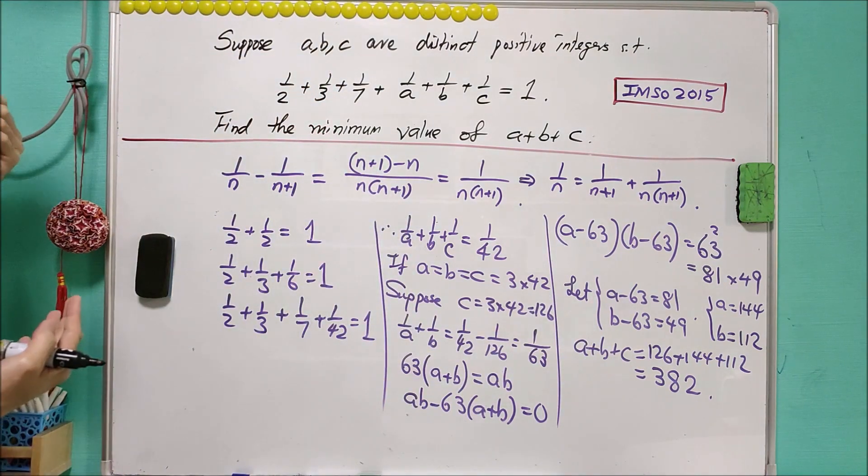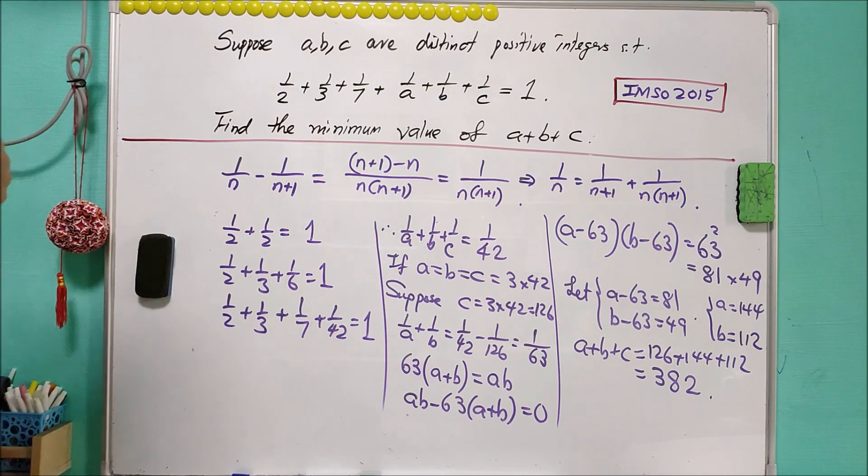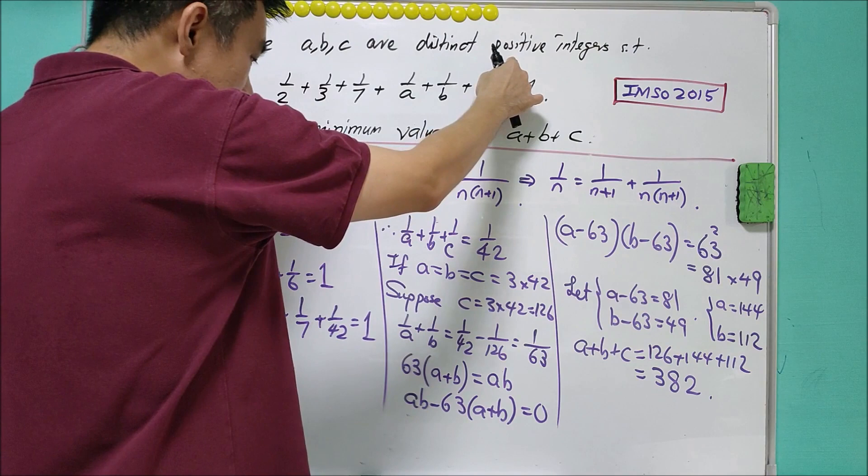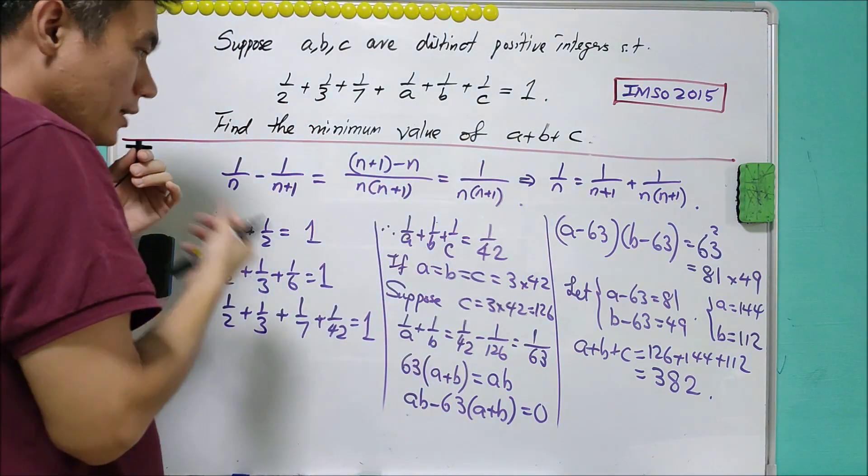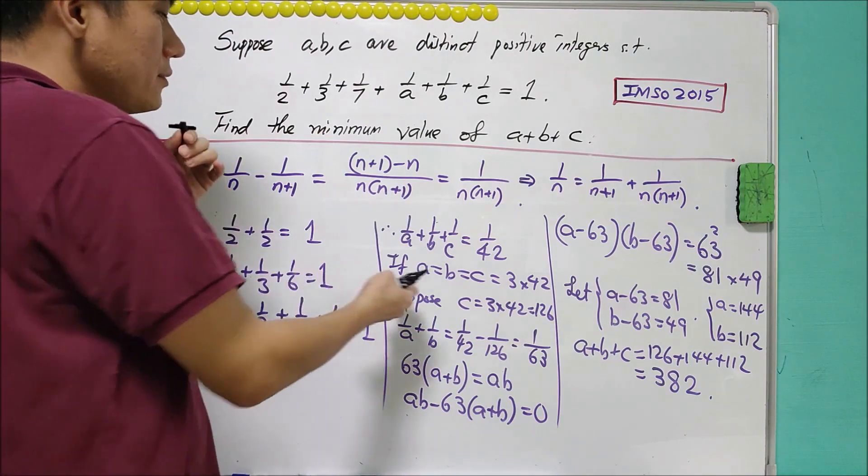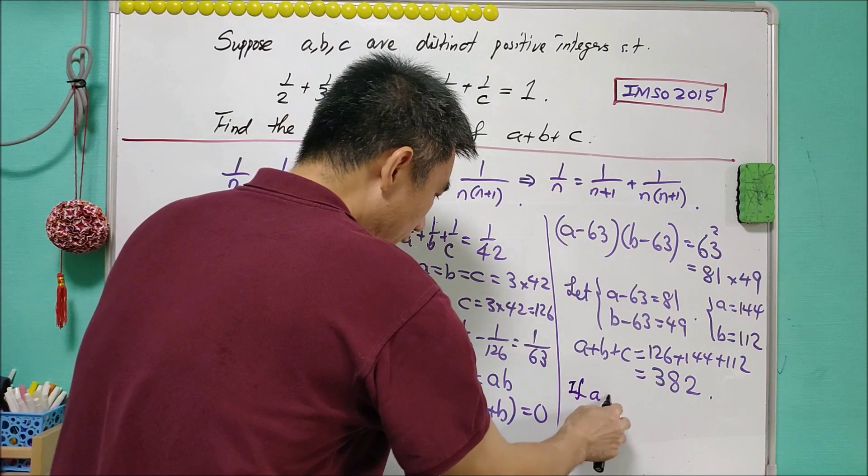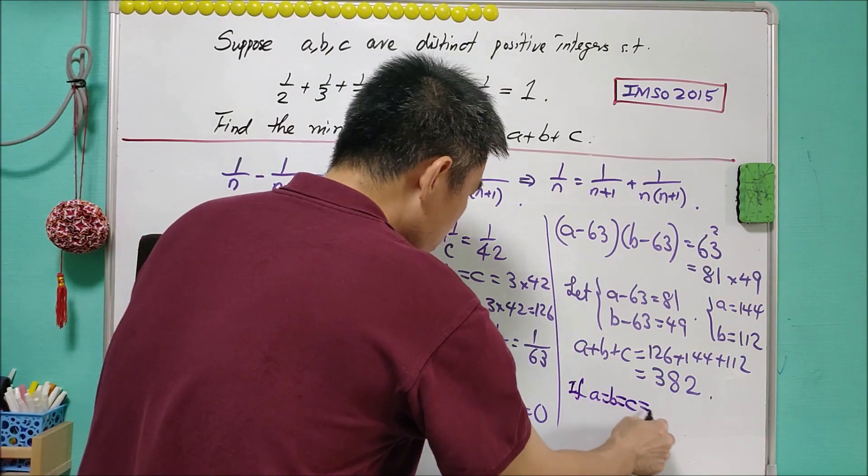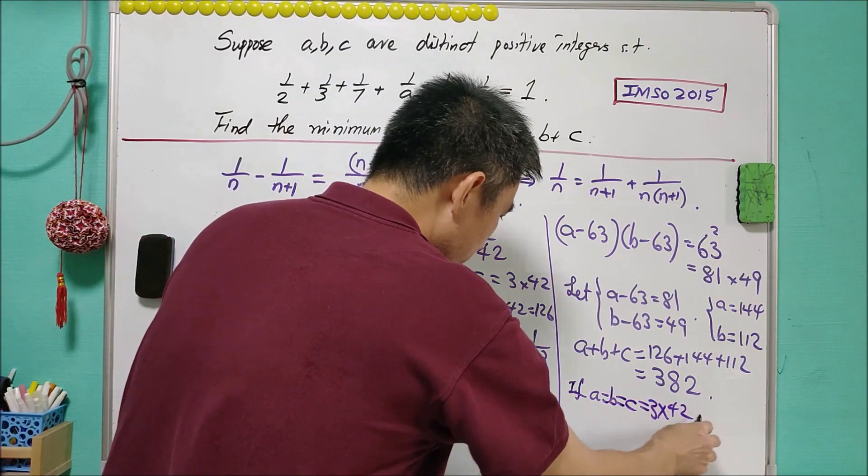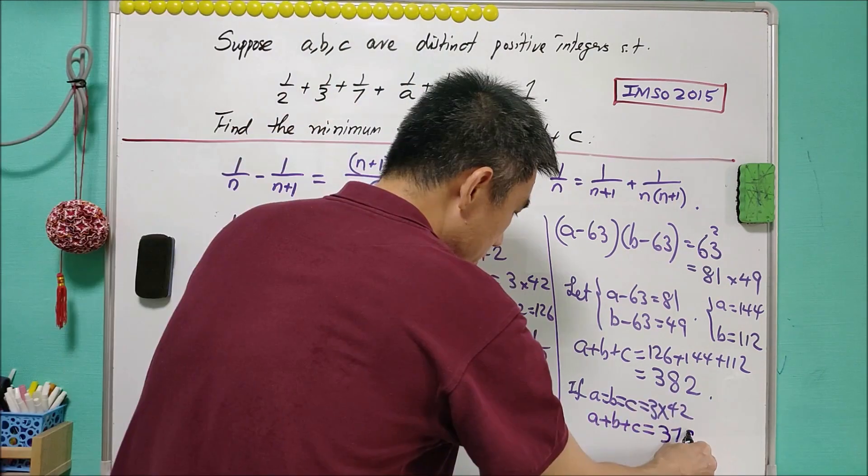Now we get the answer that the sum is equal to 382. But we do not know whether this is minimum or how close that it is to the minimum. Since A, B, C are positive integers, if we allow A, B, C to be the same, then the minimum will be obtained when they are all the same and equals to 3 times 42. If A equals to B equals to C equals to 3 times 42, then A plus B plus C will be equal to 378.